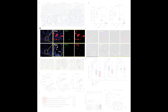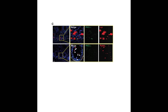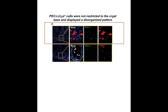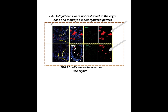As shown in the upper panel C, active inflammatory lesions in intestinal samples of Crohn's disease patients show that cells with low PKC iota levels that were lysozyme-positive were not restricted to the crypt base, but display a disorganized and diffused pattern not confined to the granule. In addition, lower panel C shows that a large number of TUNEL-positive cells were observed in the crypts of active lesions, correlating with low PKC iota expression.